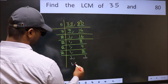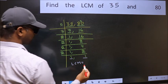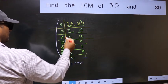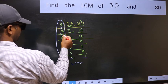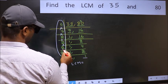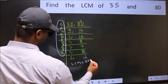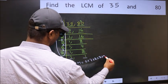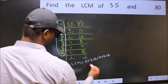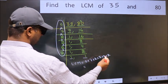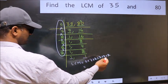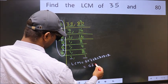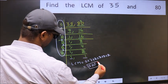So our LCM is the product of these numbers. That is 5 into 7 into 2 into 2 into 2 into 2 into 2. When we multiply these numbers, we get 560 as our LCM.